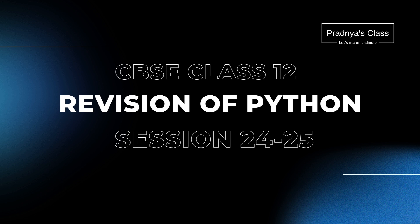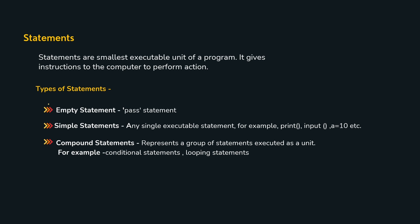We are done with the discussion of all the tokens. Make sure you are clear with the usage of input and print functions. Moving ahead to some more basic concepts: types of statements. The first is the empty statement — pass is an empty statement in Python, used when syntax requires some code but you have nothing to write. The second is a simple statement like print, input, or an assignment. The third is a compound statement — a group of statements like conditional statements and looping statements.